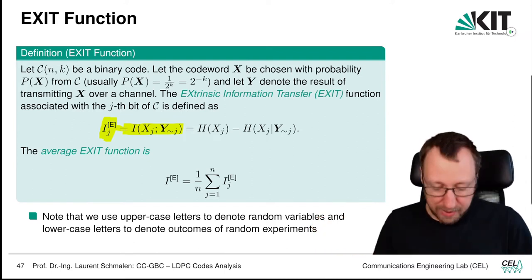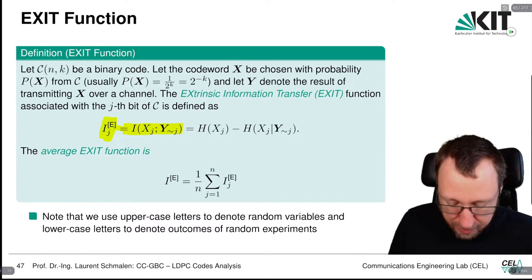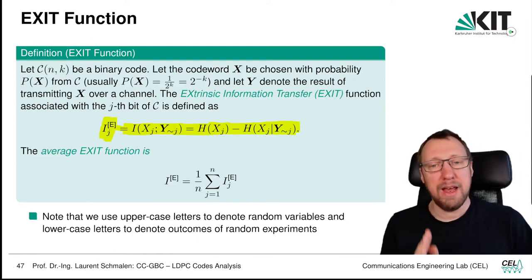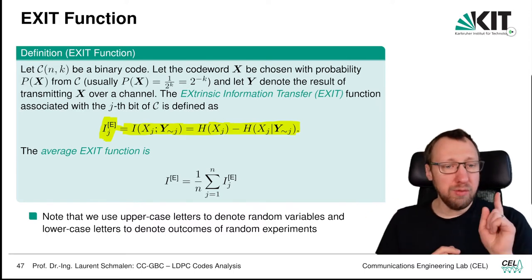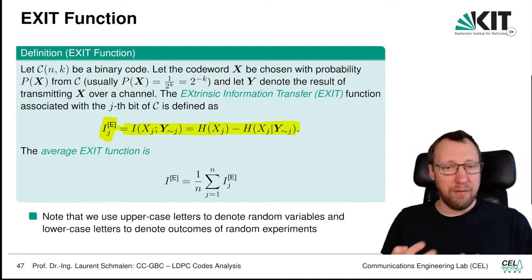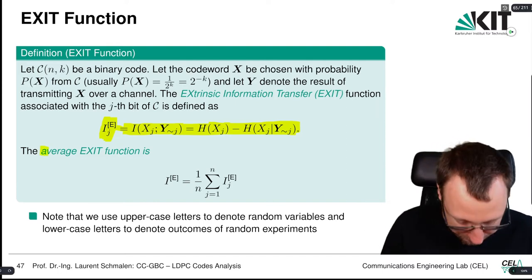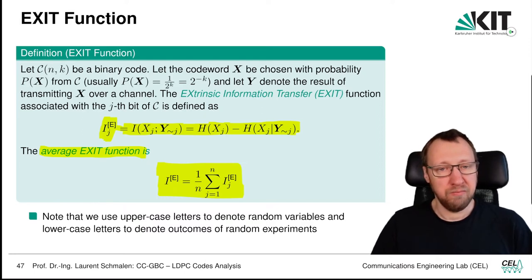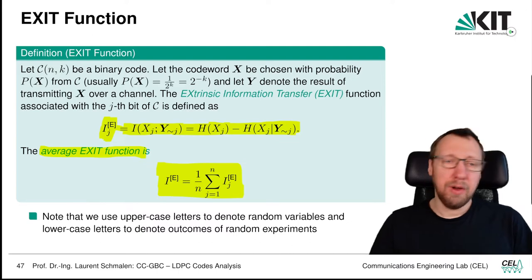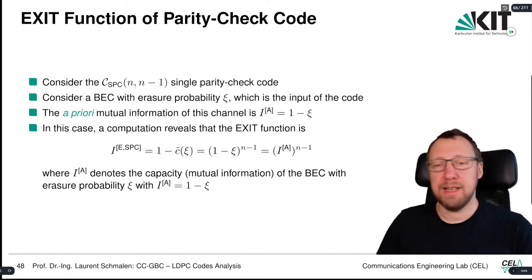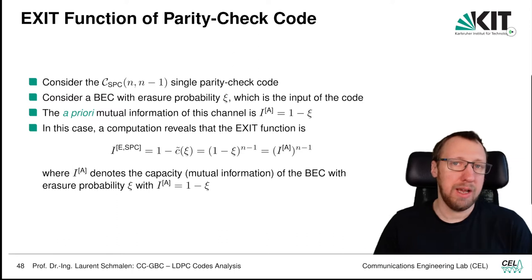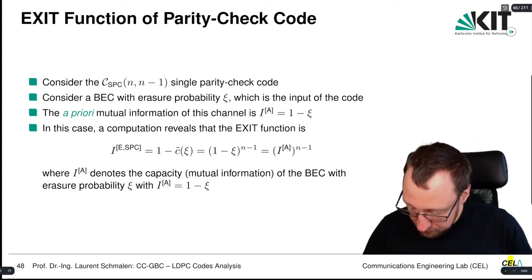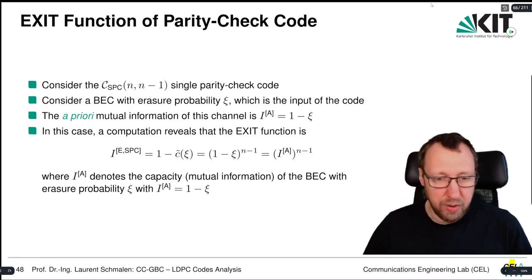Formally, I_{e,j} = H(x_j) − H(x_j | ỹ_j), the entropy of bit x_j minus the conditional entropy given ỹ_j. We can compute this for every position and take the average. For LDPC codes, we are interested in single parity check codes and repetition codes, since an LDPC code is made up of these two components.